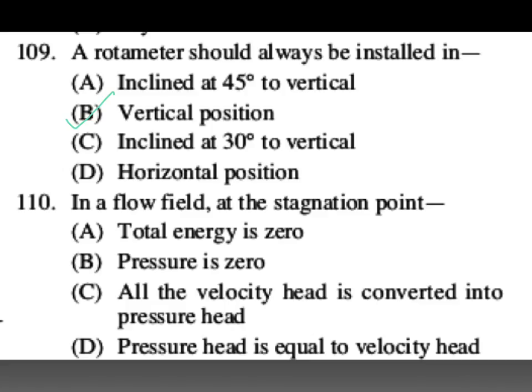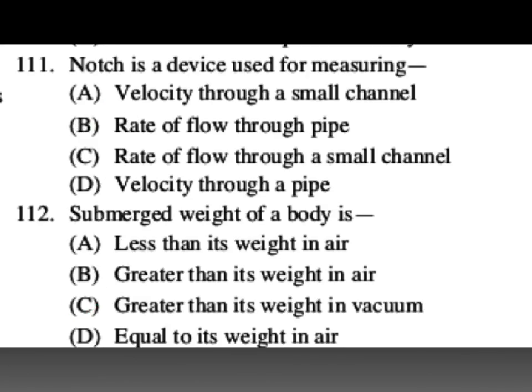In a flow field at the stagnation point, velocity is zero, and all velocity head is converted into pressure head. C is your answer. A notch is a device used for measuring rate of flow through a small channel. C is your answer.